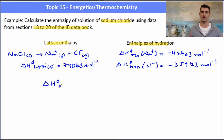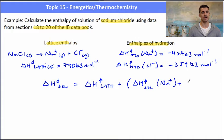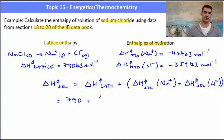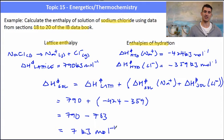The ΔH of solution equals the ΔH of lattice enthalpy plus the sum of the enthalpies of hydration. We add the ΔH of hydration of Na⁺ and the ΔH of hydration of Cl⁻ together. So the overall enthalpy change is: ΔH sol = 790 + (−424) + (−359) = 790 − 783 = +7 kJ/mol. It's still an endothermic process — it takes a little bit of energy from the surroundings to dissolve sodium chloride.